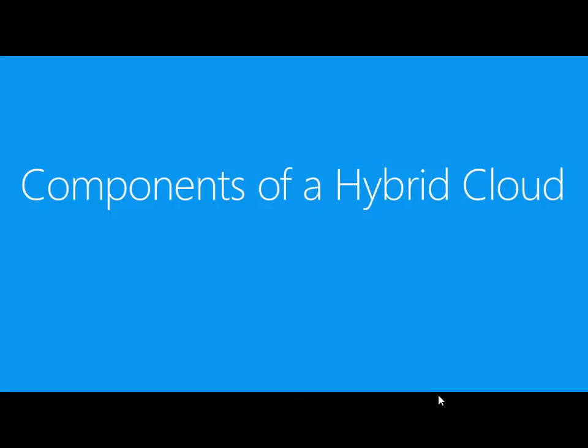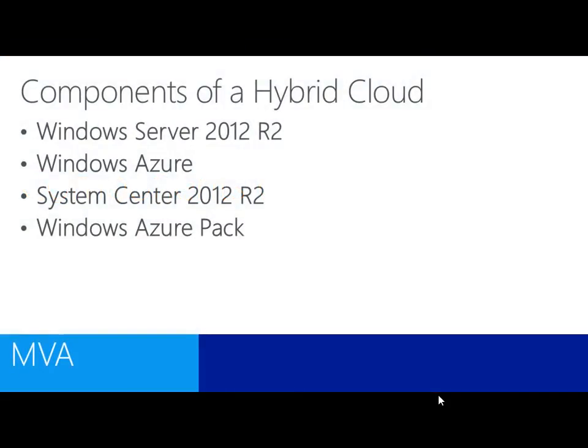So what are some of the components of a hybrid cloud? There are four of them. Notice the first one — and it's not first by mistake — Windows Server 2012 R2 is the foundation. It is the center of our hybrid cloud environment. Not only is it our on-premise server, but it has those cloud-friendly, cloud-first design principles baked into its DNA, so that when you want to connect to the platform of Windows Azure, it just works. The other three — Windows Azure, System Center 2012 R2, and the Windows Azure Pack — simply amplify what 2012 R2 can do for you.